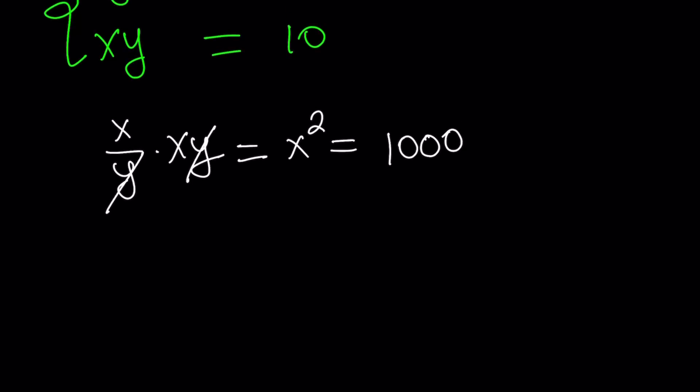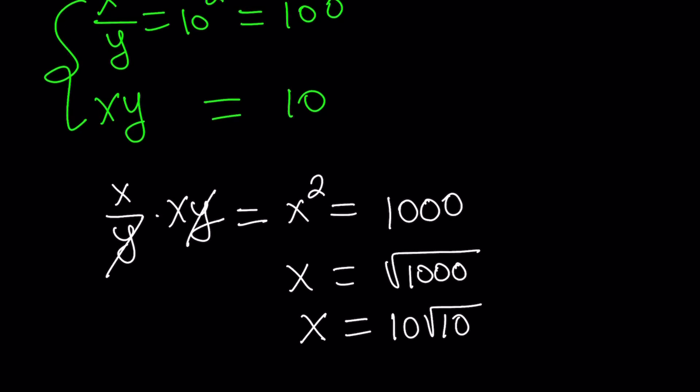So x is equal to the square root of 1,000 plus minus. But remember, x cannot be negative. So we have to take the positive solution. x equals the square root of 1,000. Since 1,000 is 100 times 10, we could also write this as 10 times the square root of 10. So that is the x value. And we get a single value from here because x and y have to be positive.